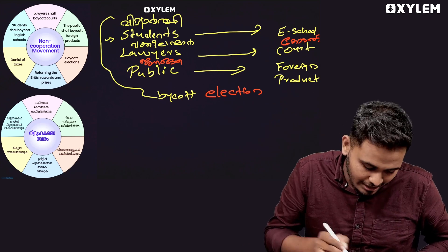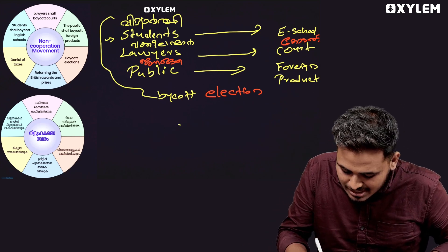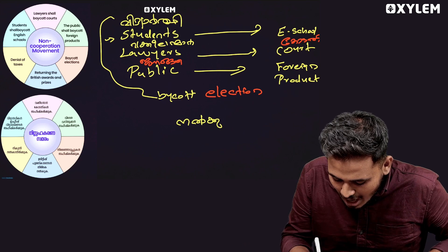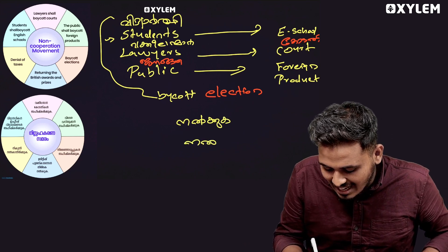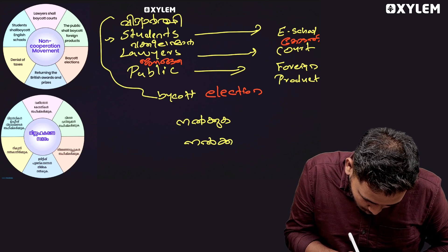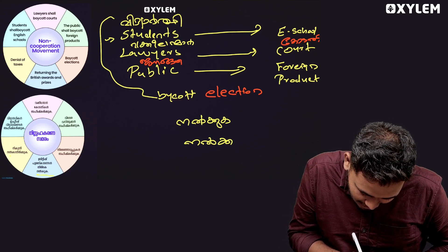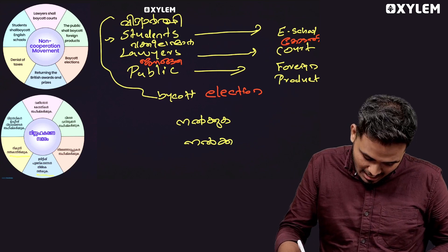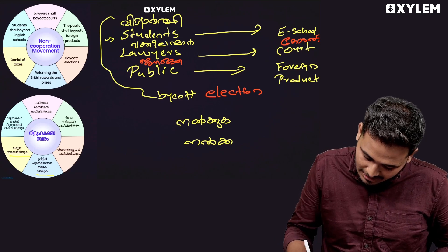Malayalam students, you can say one of the four — one of the four features. One of the four, one of the four.